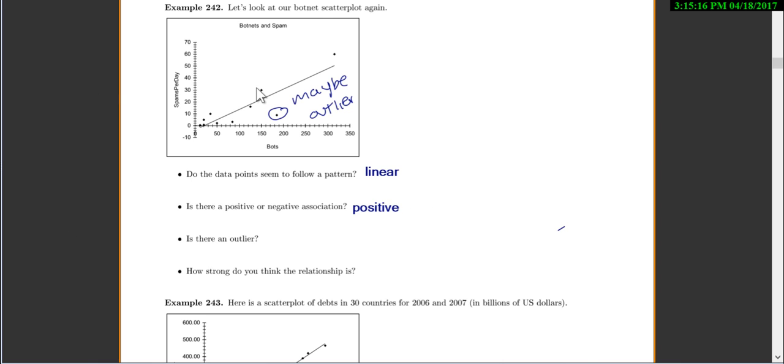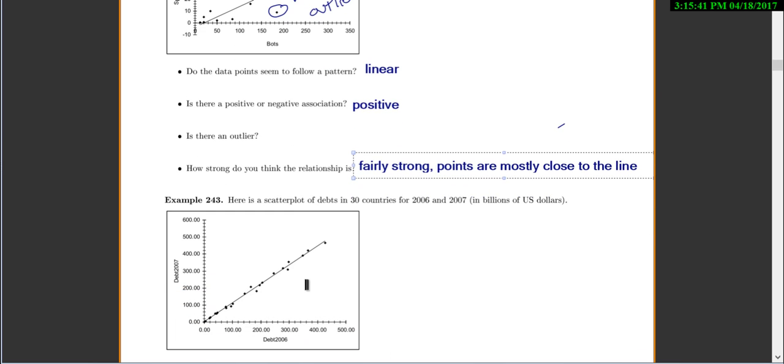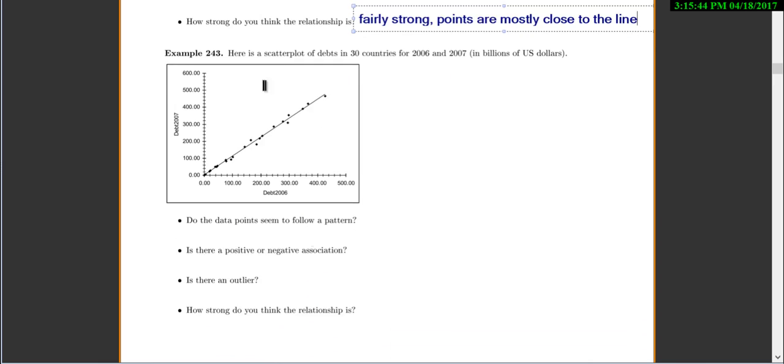And how strong do you think the relationship is? So how close are these points to the line? Most of them are actually fairly close, except for that one, but not incredibly close. But they're still not too far from the line. So I'd probably say fairly strong points that are mostly close to the line.